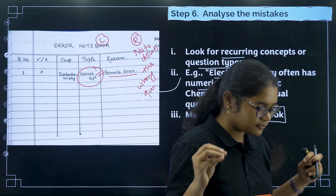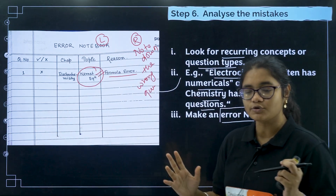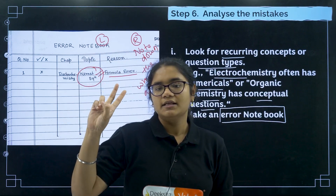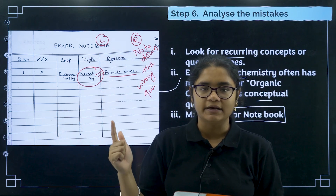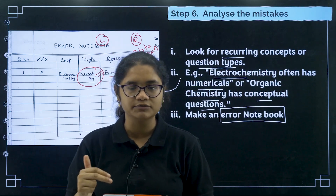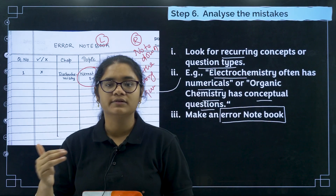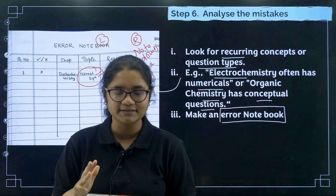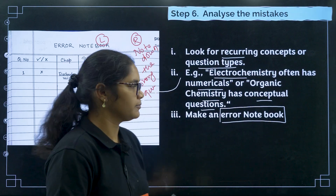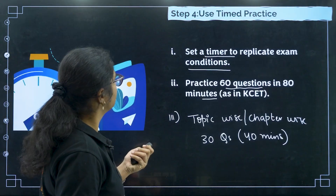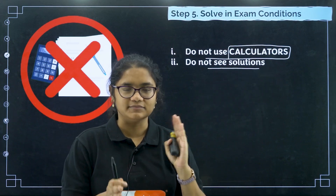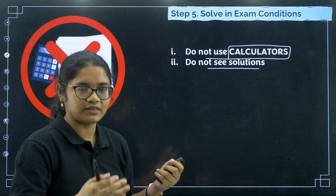So these are the six steps to follow for solving previous year questions. First, select a chapter. Second, read that chapter — concept should be clear. Third, gather the resources for PYQs. Fourth, solve the questions in exam conditions. Fifth, analyze your preparation — use timed practice and solve under exam conditions. These steps together form the complete process.